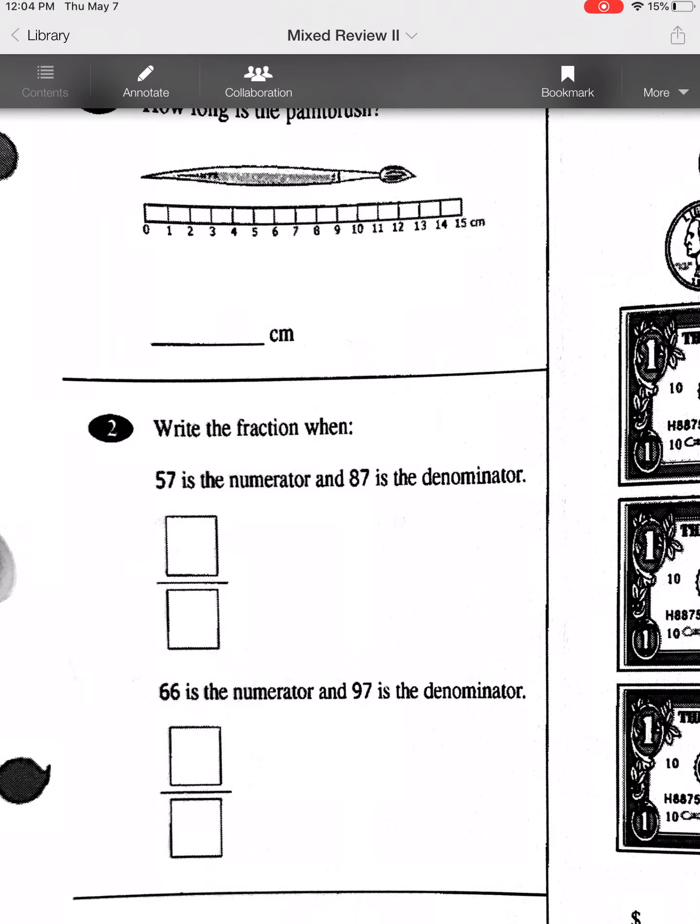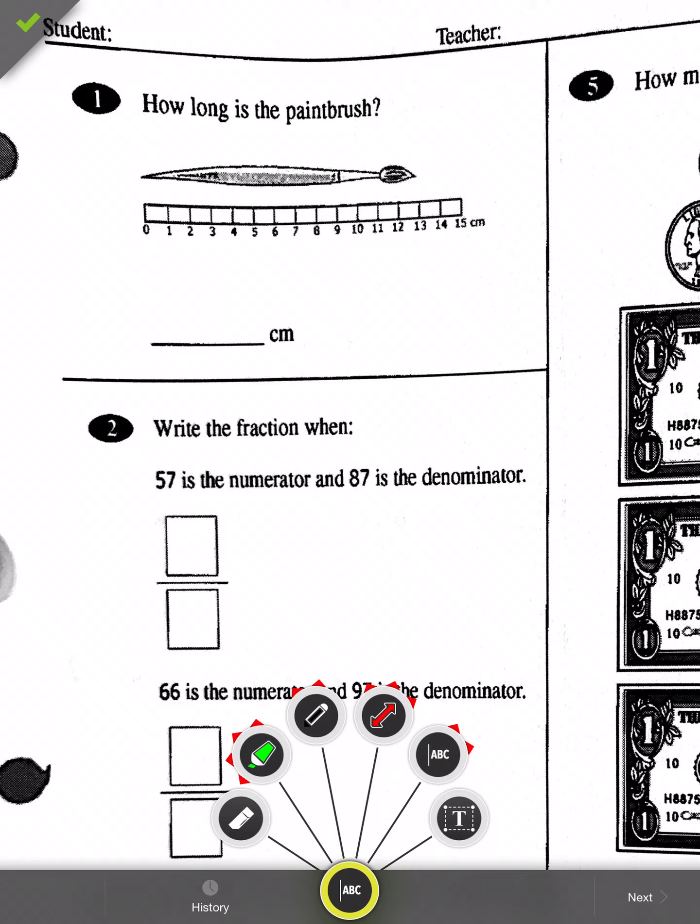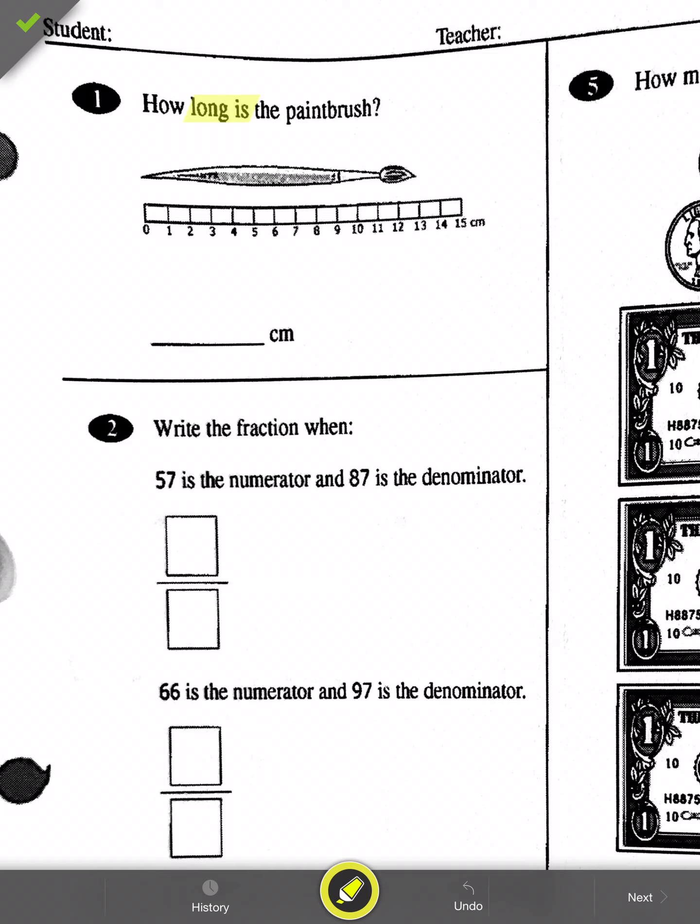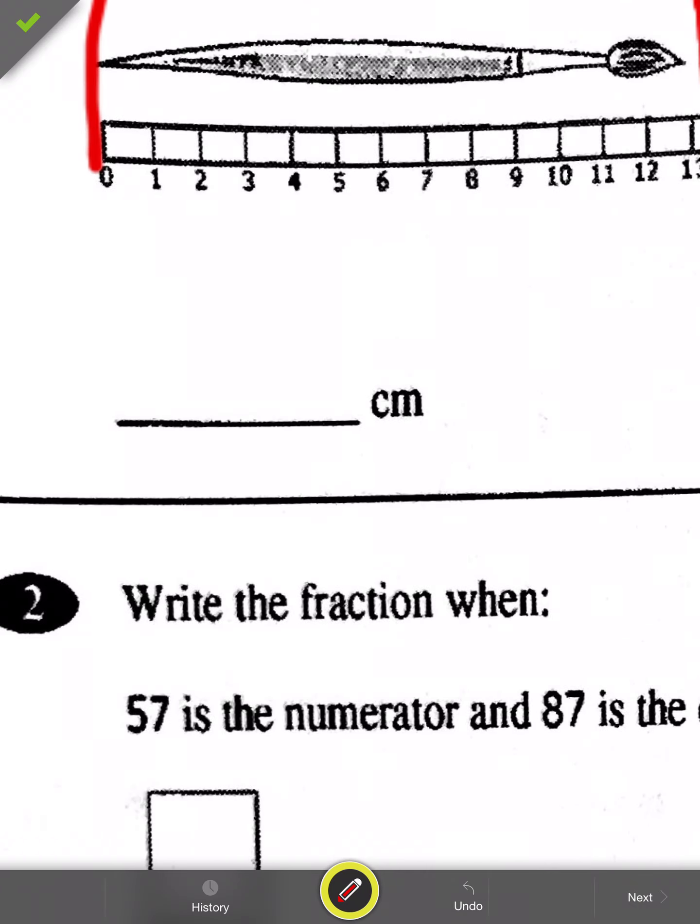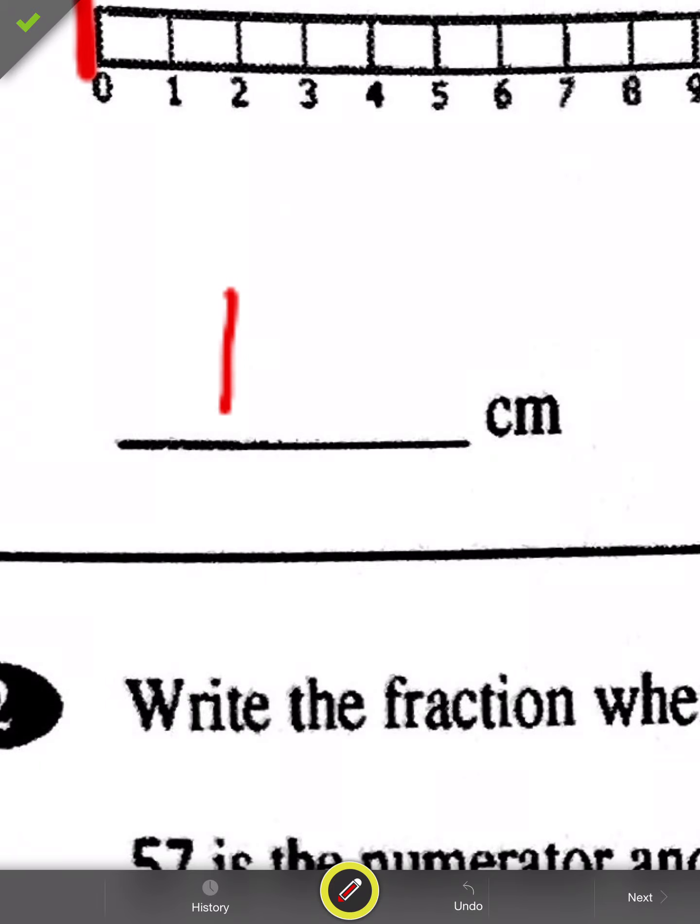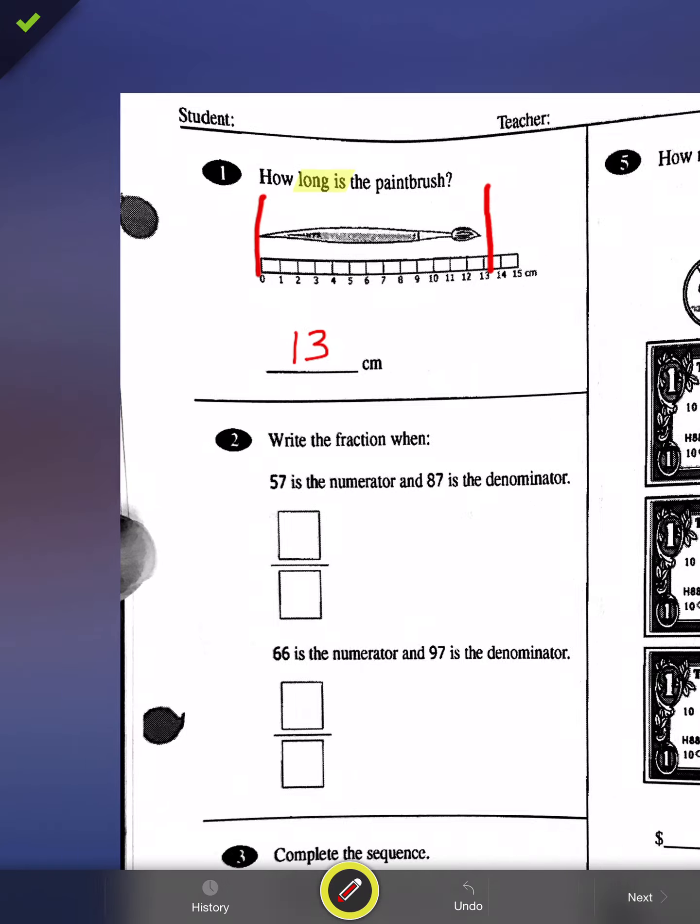The first concept that we are going to investigate is that of measurement. You can see up here with number one that we have a paintbrush, and we have to figure out how long this paintbrush is. First thing we need to do is make sure that the object, in this case the paintbrush, is starting at the zero mark on the ruler, and here we can see it is. Now the best thing to do here is find a straight edge and put that on your paper or on your iPad. You can see that this is going to come right up to that 13 centimeter mark there. So let's go ahead and write 13 in here.